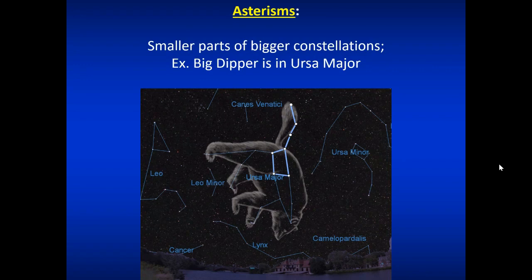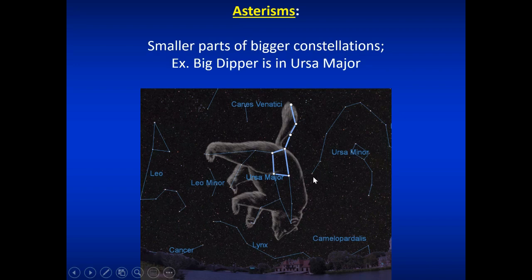There are also smaller parts of bigger constellations that make shapes — we call those asterisms. The Big Dipper is the prominent example. The Big Dipper is actually not a constellation; it is an asterism. It is part of the larger constellation Ursa Major, the Big Bear. The pan of the Big Dipper makes the back of Ursa Major, and the tail of the bear — which this bear does have — is the handle of the Big Dipper. So the Big Dipper is an asterism, not a constellation.